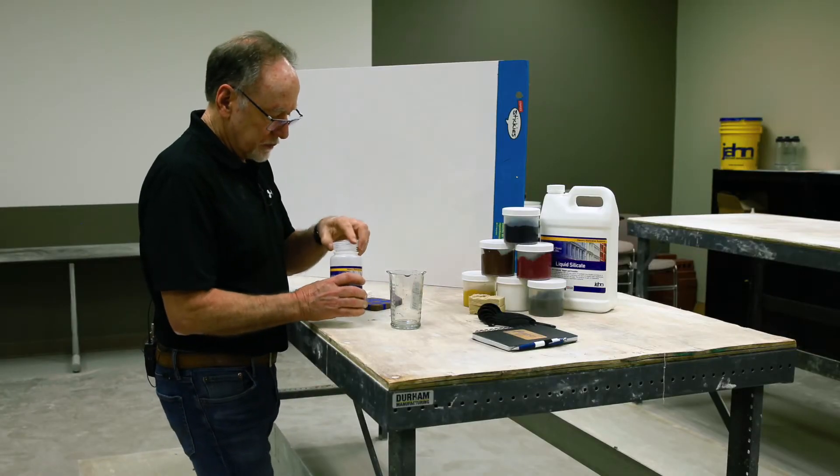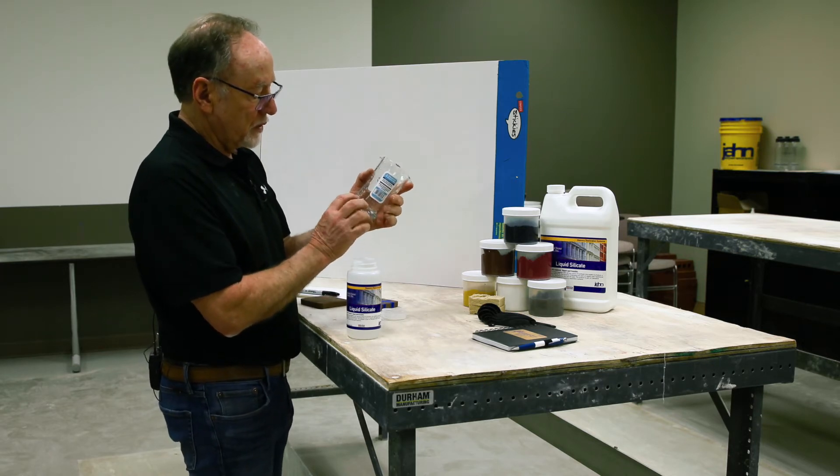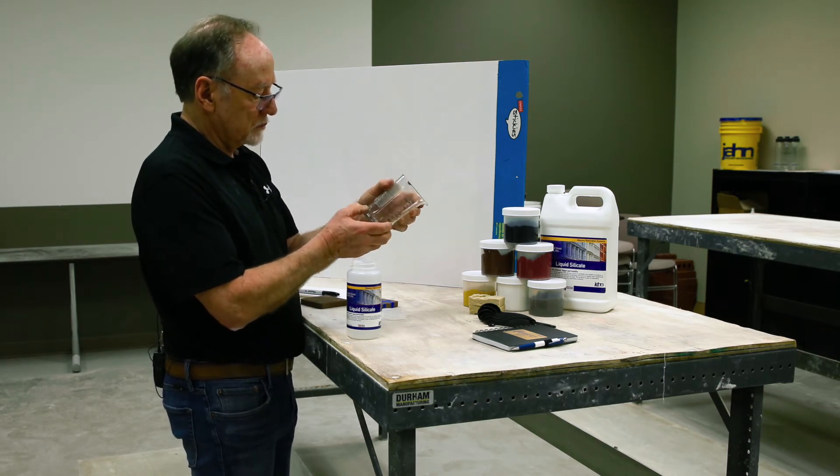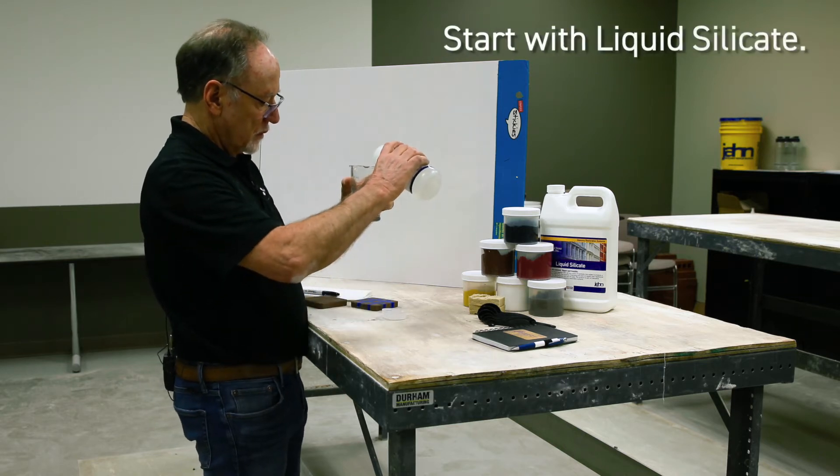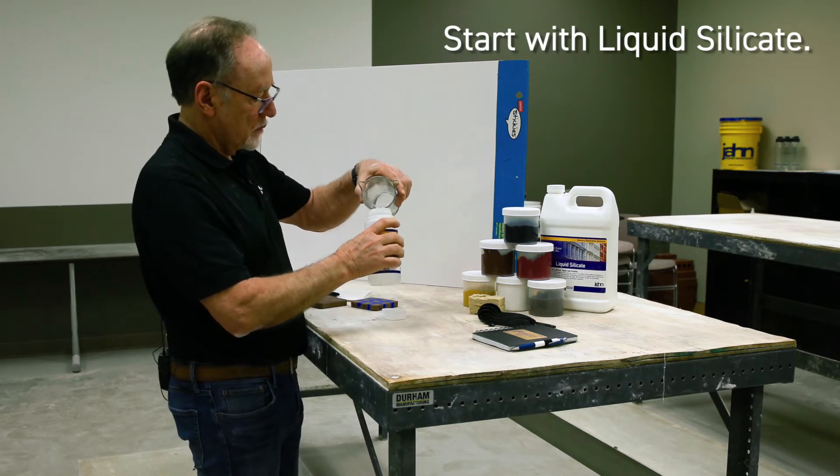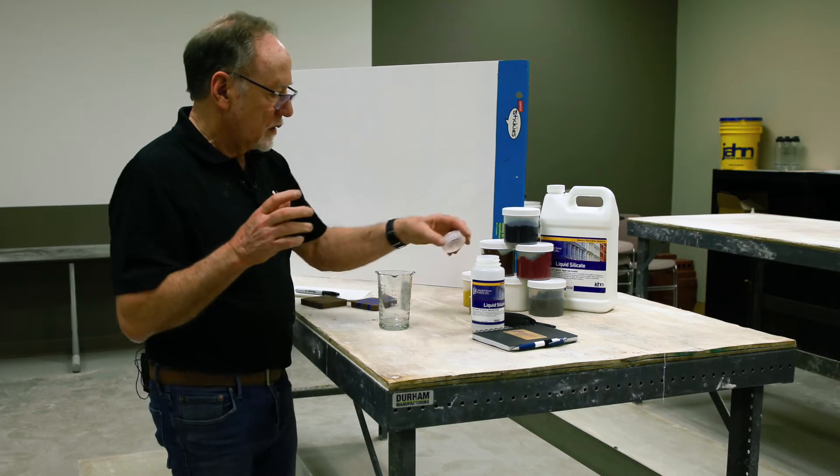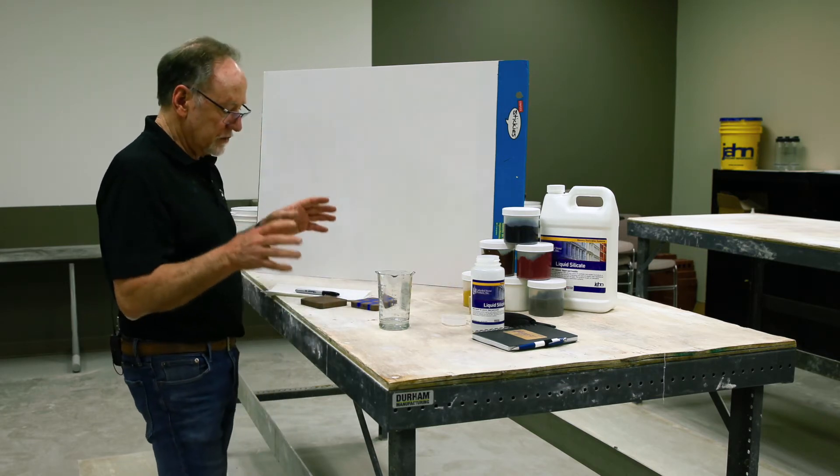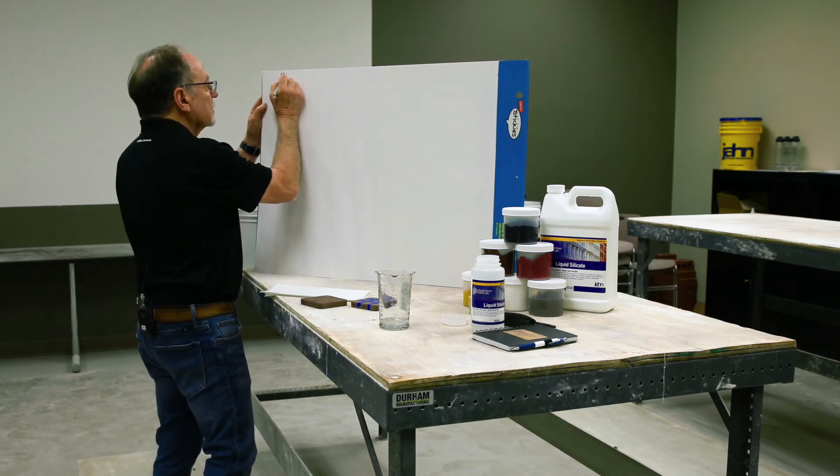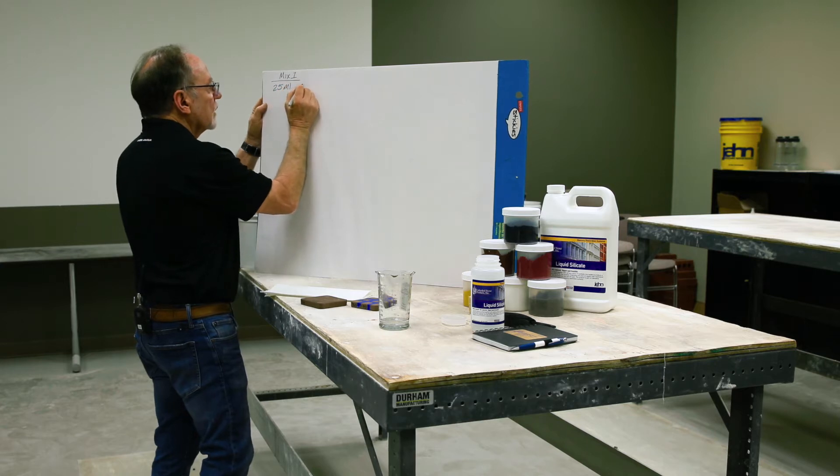And here's the way I start. Whatever the bottom measurement is on the measuring cup that you get—they vary. This is an eighth of a cup. It's also 25 milliliters or one ounce. I'm going to go with the 25 milliliters. That's my starting point. One of the most difficult things is getting people on site to actually write things down, but they need to do that. So formula one or mix one is 25 milliliters of silicate.